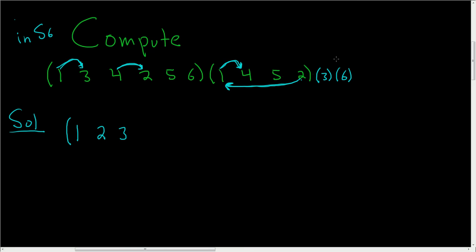And now you say, okay, where does 3 go? Well, 3 is fixed. 3 goes to 3, and then over here, 3 goes to 4, so 3 goes to 4. Again, 3 goes to 3, and then over here, 3 goes to 4, so 3 goes to 4.